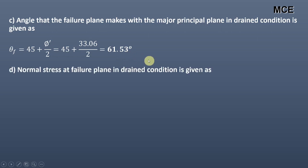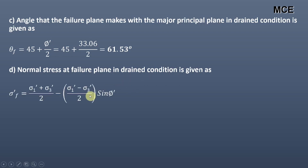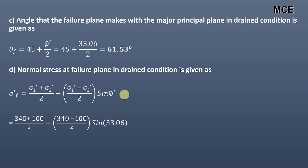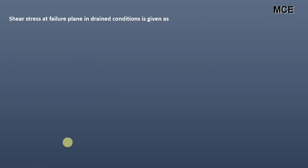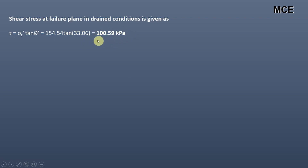To determine the shear stress at the failure plane in drained condition, we first determine the normal stress at the failure plane in drained conditions. It is given as σ'f equal to (σ1' plus σ3') divided by 2, minus (σ1' minus σ3') divided by 2, multiplied by sine of φ'. Putting the values of σ1', σ3', and φ', we get the normal stress at the failure plane equal to 154.54 kilopascal. The shear stress at the failure plane in drained condition is equal to 100.59 kilopascal.